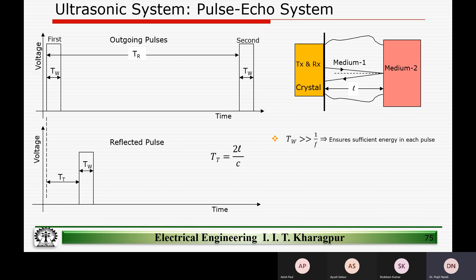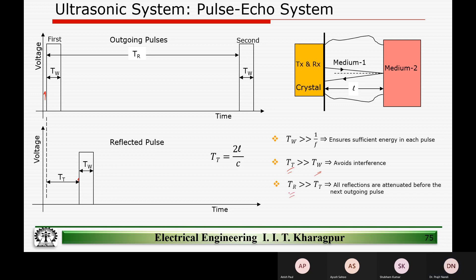First, the window width should be large enough so that there is sufficient energy in each pulse. TT — the time between the first transmitted wave and the second transmitted wave — should be much greater than TW, which will ensure there is no interference between the first wave and the second wave. We need to ensure that the second pulse is far enough from the first so that all reflections are attenuated before the next outgoing pulse.